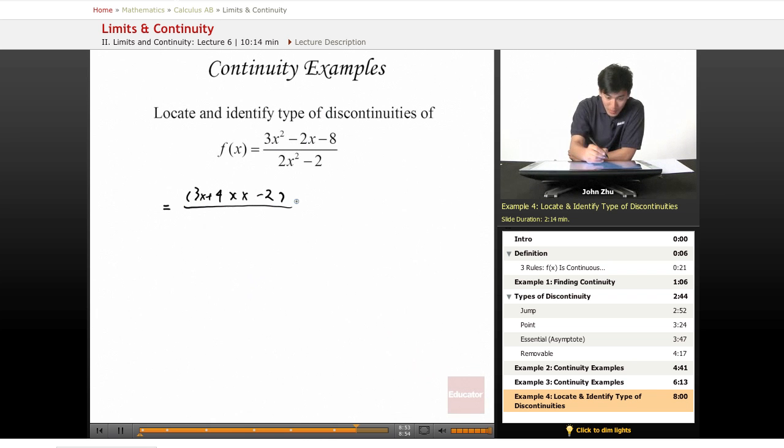And the bottom, we can pull out a 2 to make it x squared minus 1. And we notice that x squared minus 1 can be further factored. So 3x plus 4, x minus 2, over 2 times x plus 1 times x minus 1.